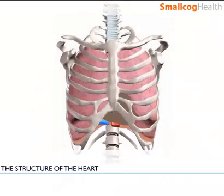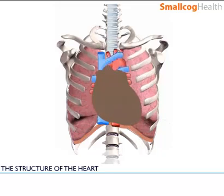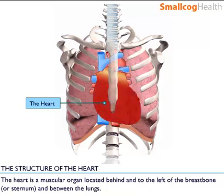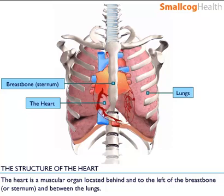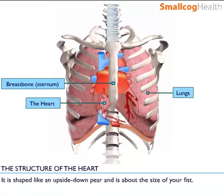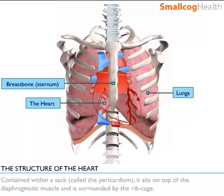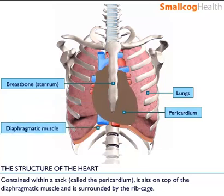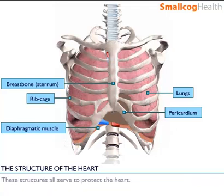The structure of the heart. The heart is a muscular organ located behind and to the left of the breastbone or sternum and between the lungs. It is shaped like an upside down pear and is about the size of your fist. Contained within a sac called the pericardium, it sits on top of the diaphragmatic muscle and is surrounded by the ribcage. These structures all serve to protect the heart.